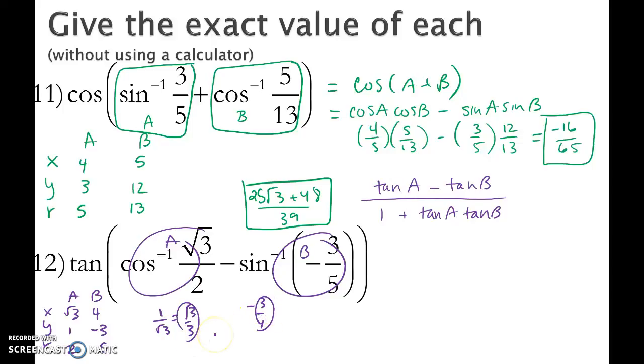So these are the two values that I'm going to be putting in my problem. So I have root 3 over 3 minus a negative 3 over 4 divided by 1 plus root 3 over 3 times negative 3 over 4.